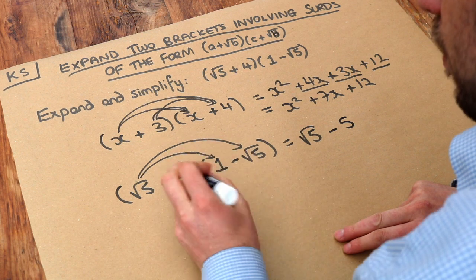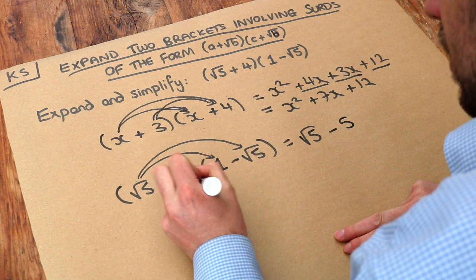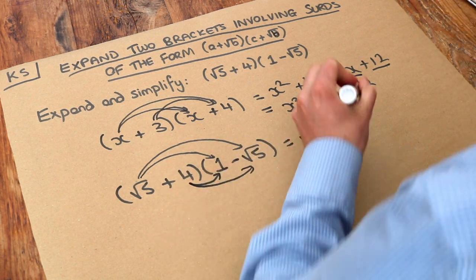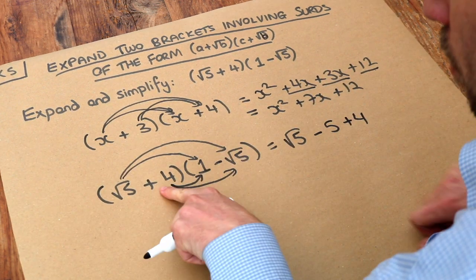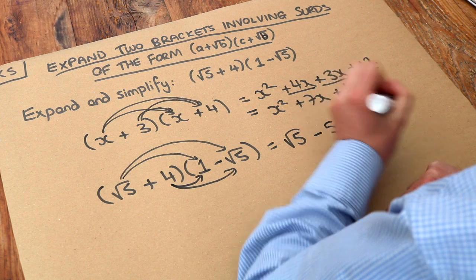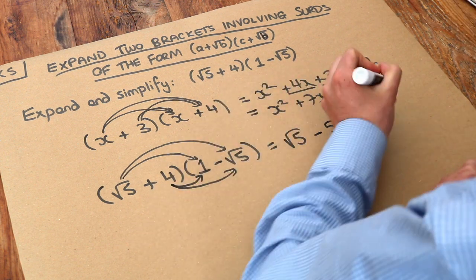And then we do the 4 times each of the things in the second bracket. So the 4 times the 1 is just 4. And the 4 times the negative root 5, well positive times negative is negative. And 4 lots of root 5 is just 4 root 5.